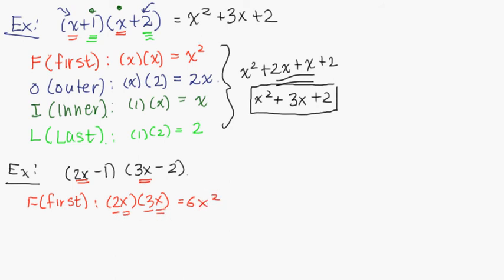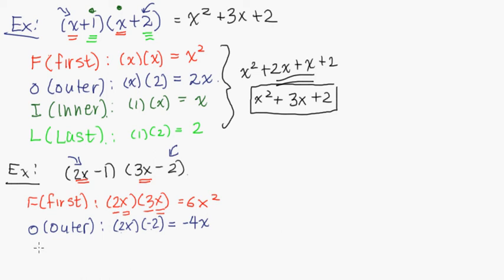Then we'll go into outer. That's the outer terms here: 2x times negative 2. 2 times negative 2 is negative 4, times x. Now we're going to get I, the inner. Inner is negative 1 times 3x. Negative 1 times 3 is negative 3, times x.